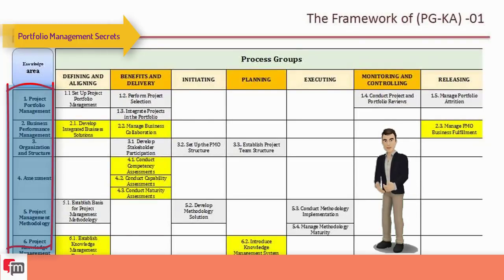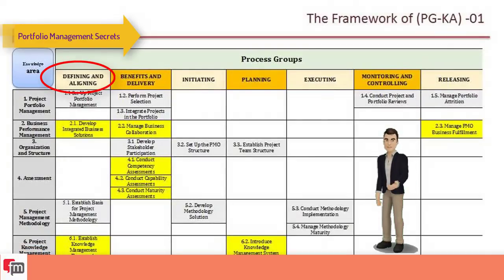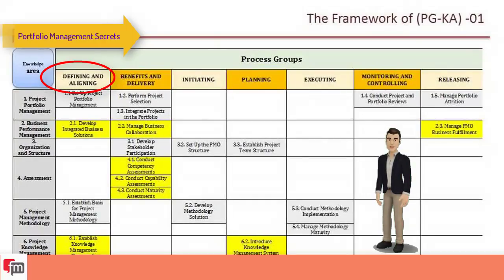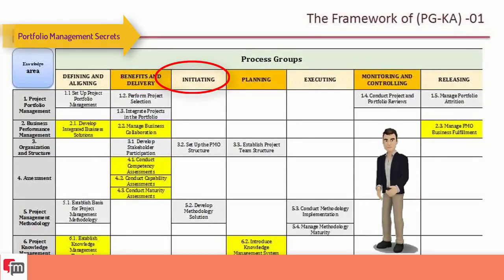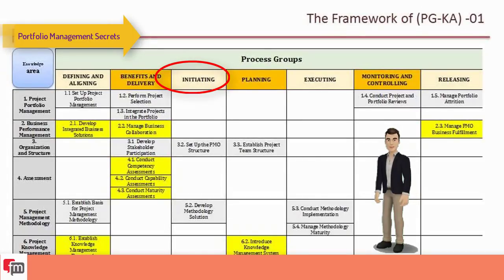The seven process groups for this PMO framework are as follows. First, defining and aligning: processes performed to investigate and evaluate the availability of initiating a new product or making a change to an existing one. Second, benefit and delivery: processes consisting of achieving desired benefits of a project, program, or portfolio according to organizational policy. Third, initiating: processes performed to define portfolio, program, or project objectives and apply resources to portfolio components.